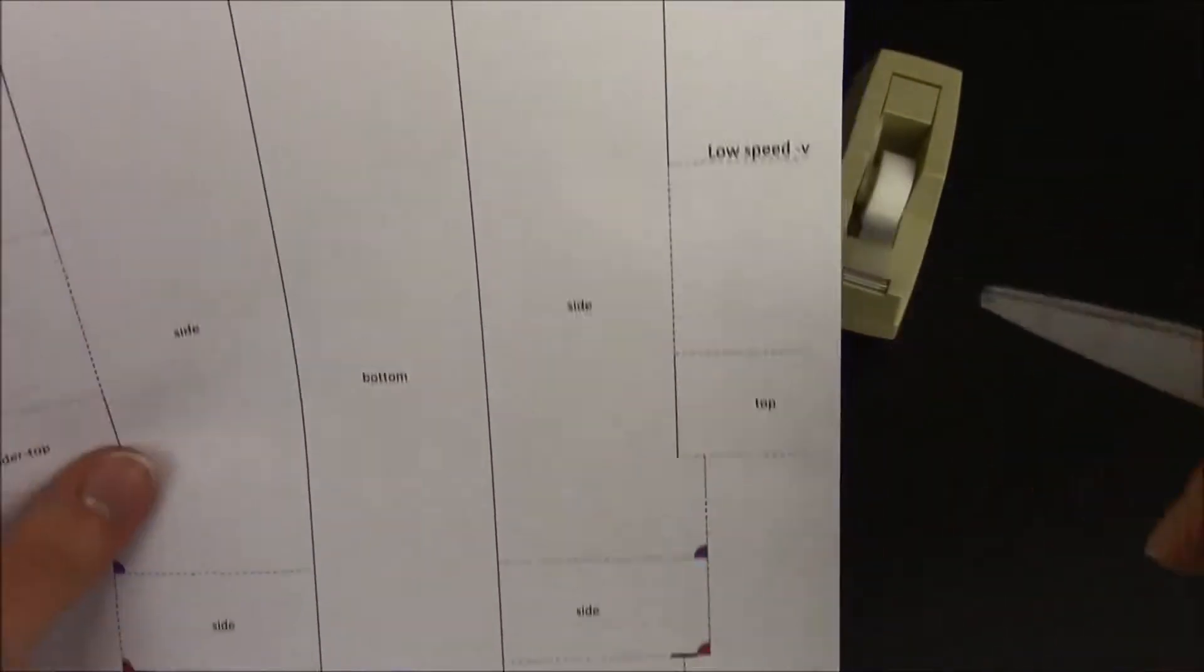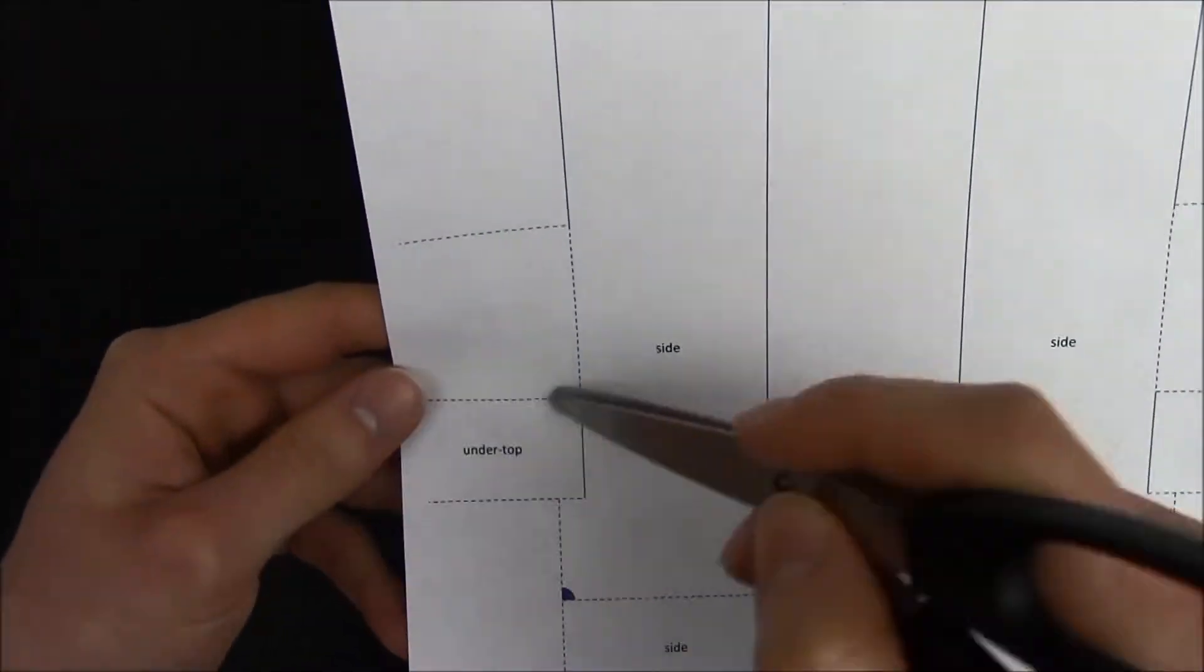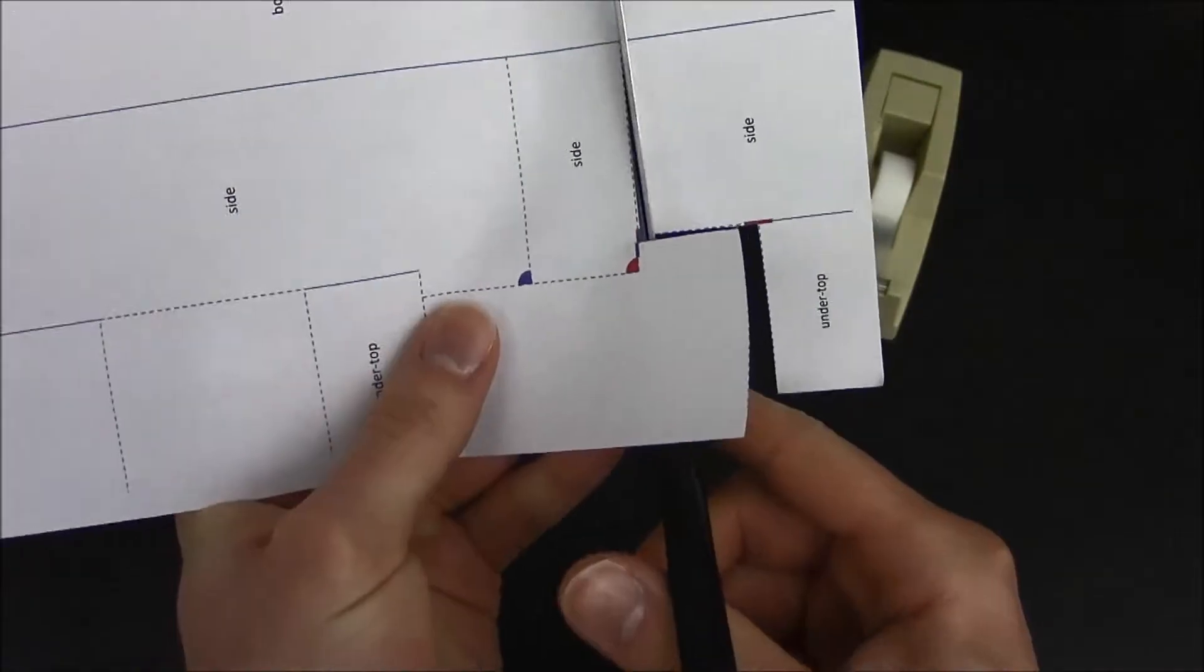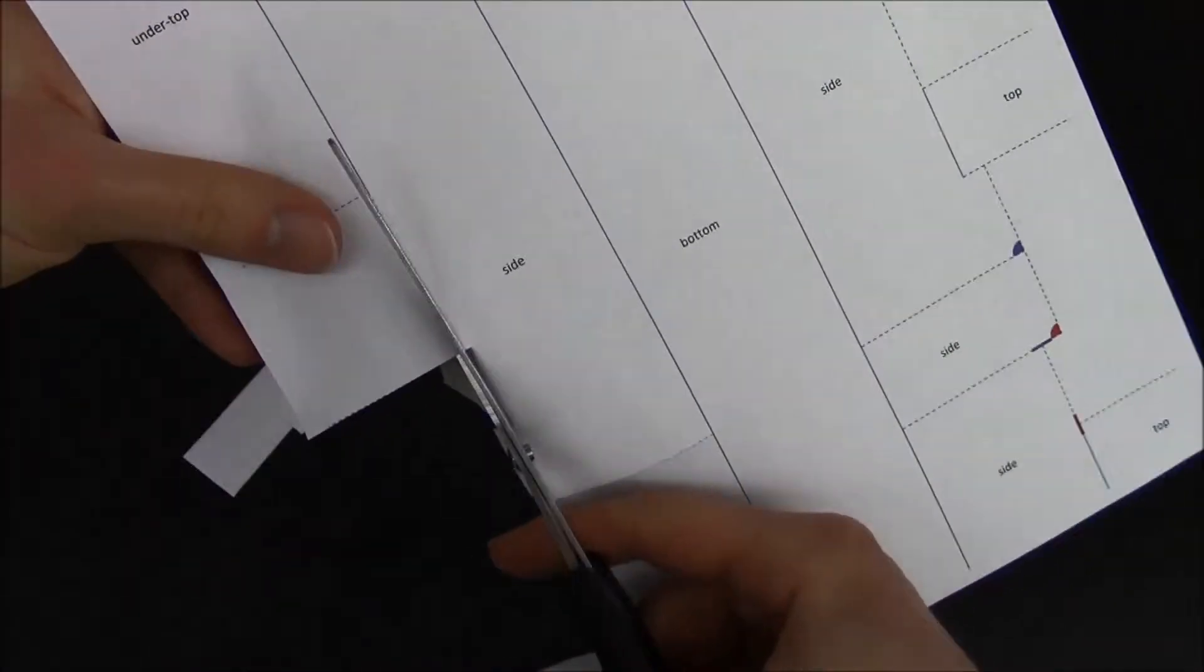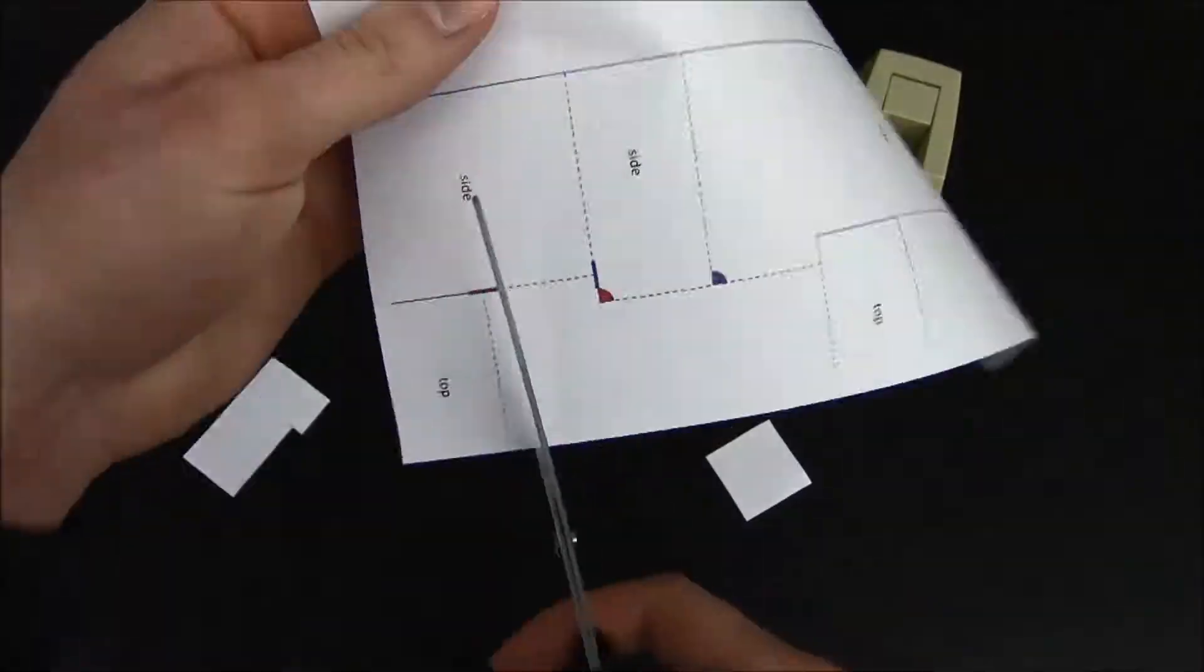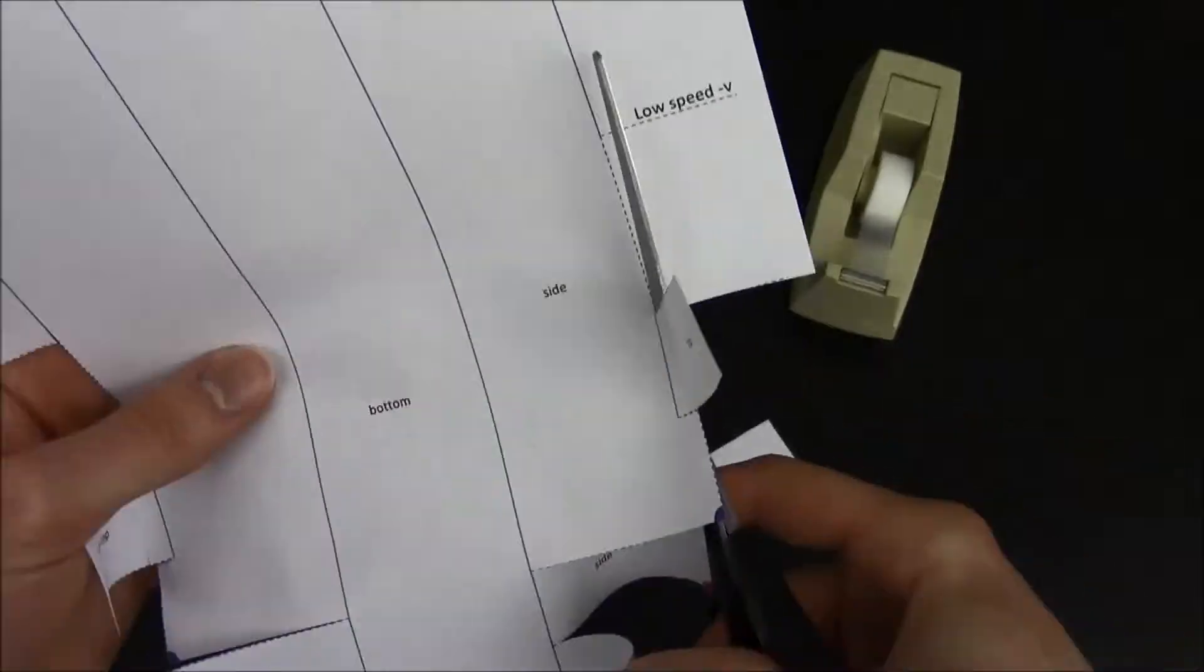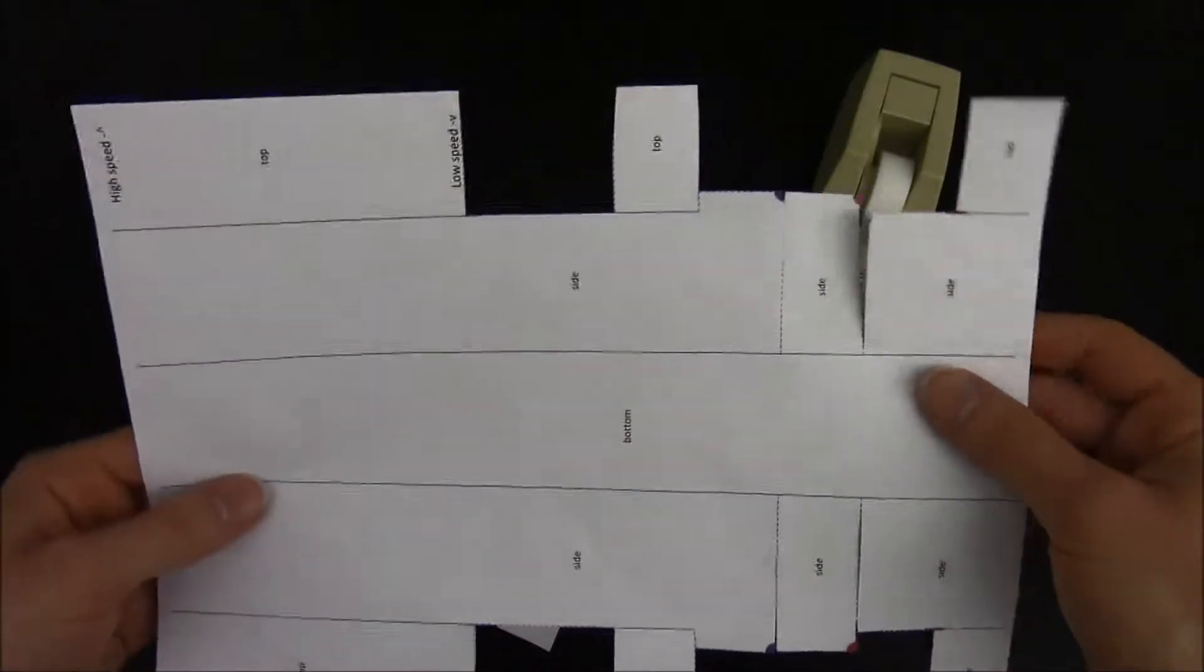We'll start by cutting the dashed lines. This is what your template should look like after cutting on the dashed line.